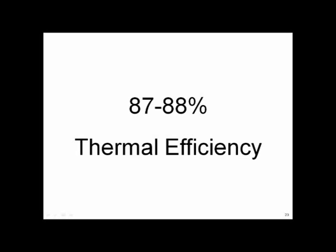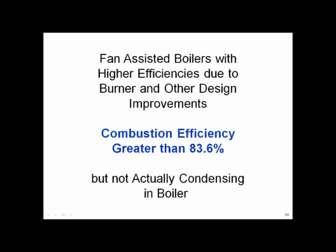We pushed efficiency right up to the edge — as high as we can get it without raining in the boiler. A side note: the boiler code says 83.6% combustion efficiency and higher requires Category 4 condensing vent. Even though you were not condensing, you had to pay the extra money for the right vent. That was where we were about 15 years ago — the best we could do.